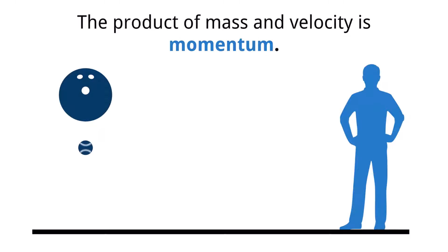All moving objects have momentum. The amount of momentum an object has is directly dependent on the mass and velocity of the object. This means that objects that are very massive and have large velocities will have a large momentum.